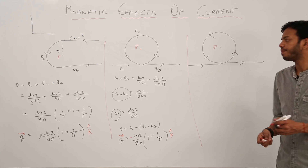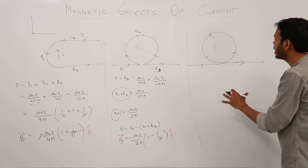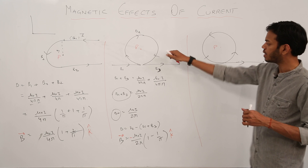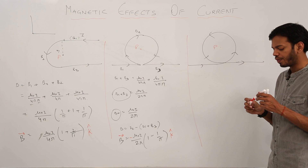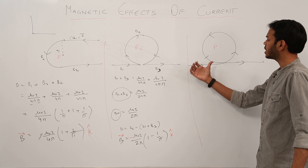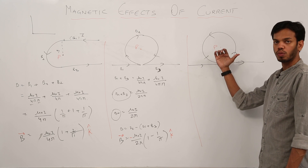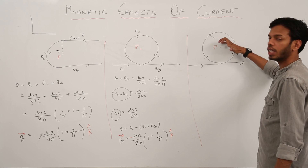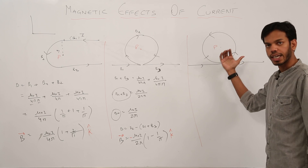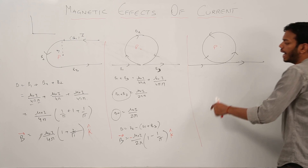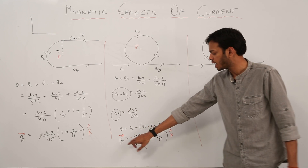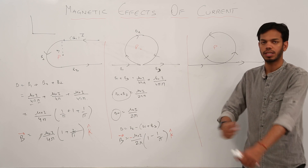For the third example, the answer will be exactly similar to the first example with just a small difference. The magnetic field due to each straight part is vertically outwards (k-hat), and for this part also vertically outwards, so you will be adding B1, B2, and B3 together — all positive — and you will get the same final answer with a positive sign.